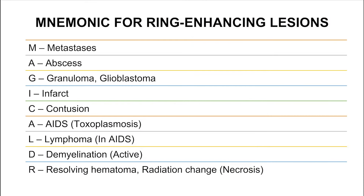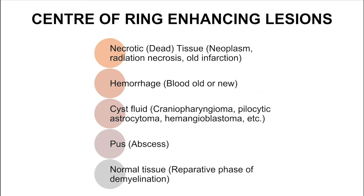The most common ring enhancing lesions are remembered with a mnemonic called MAGICAL DOCTOR, where M represents metastasis, A represents abscess, G for granuloma or glioblastoma, I for infarct, C for contusion, A for AIDS-related ring enhancing lesions like toxoplasmosis, L for lymphoma, D for demyelination, R for resolving hematoma or radiation necrosis.